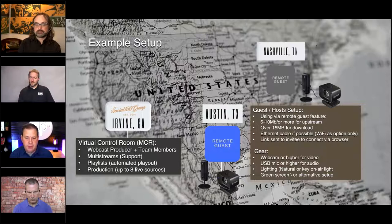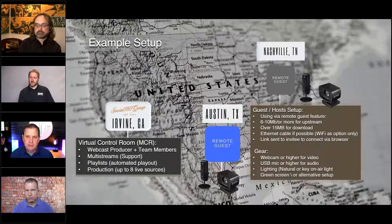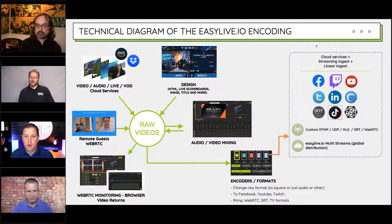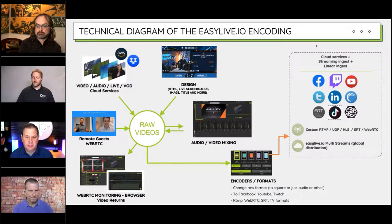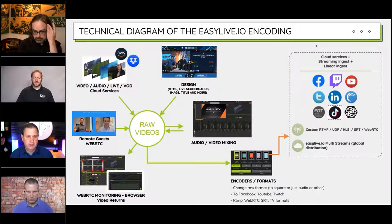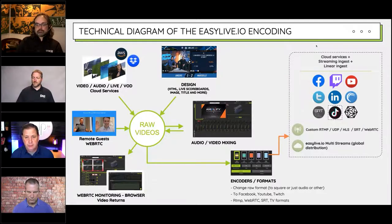Gear could be a webcam — like the Elgato face cam that just recently got released, or one of the wave mics. You don't have to have a really high-end setup, but obviously considerations need to be taken based on the type of production. In terms of the encoding process and scalability of EasyLive.io, it has a lot of versatility. You can pull in the raw video. You can have live scoreboards, set up your image and titles — scene overlays that could be custom or leveraged from something like Singular.live or other vendors that work with EasyLive.io.